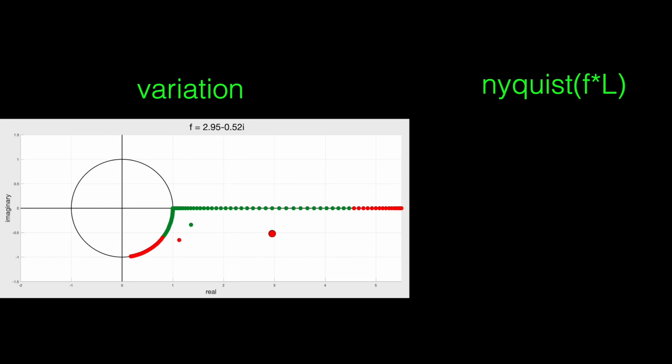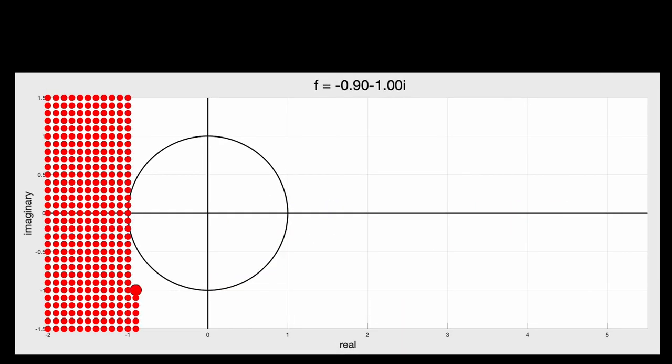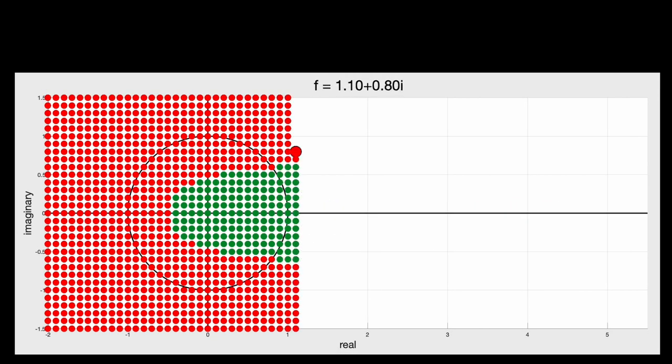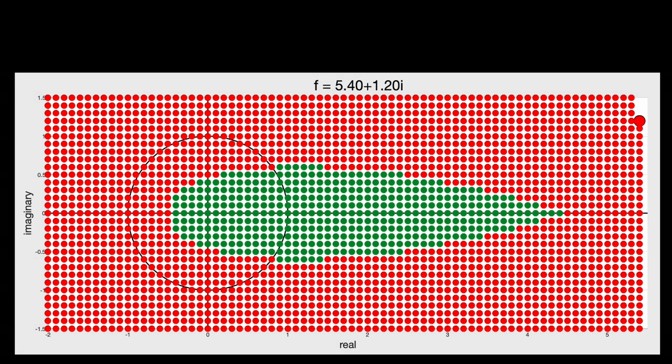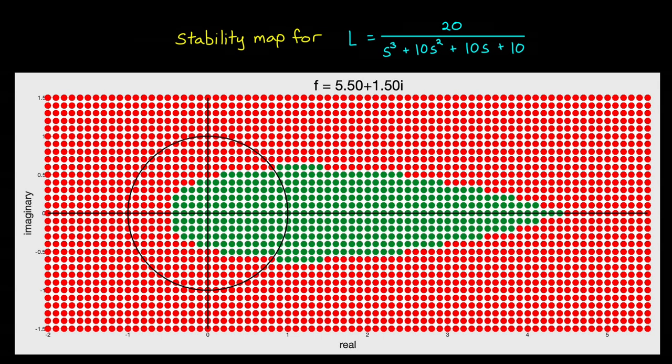Now rather than check points one at a time, we can use a computer to try hundreds of variations and color the points red that cause instability and green that don't. And we get something like this. Remember, margin is how much variation a system can tolerate in any direction. So starting from the nominal system, f equals 1, we can say that this system can vary up to 4.5 in gain and 37 degrees in phase. But as we can see from this plot, the story of how robust our system is to variation is a lot more nuanced than just looking at classical gain and phase margins.